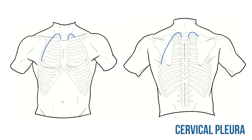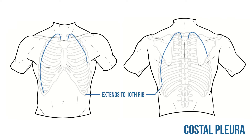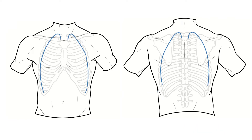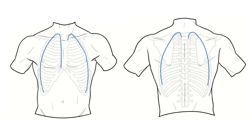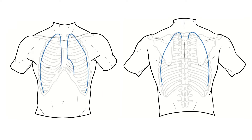From here it lines the inside of the ribcage as costal pleura, finishing at the level of the 10th rib on either side. Centrally we have the mediastinal pleura, and on the right this heads straight down towards the 6th costal cartilage. However on the left we need to accommodate the heart, so as it reaches the 4th costal cartilage it deviates laterally, then travels around the heart to the 6th costal cartilage.